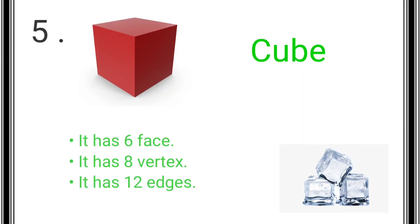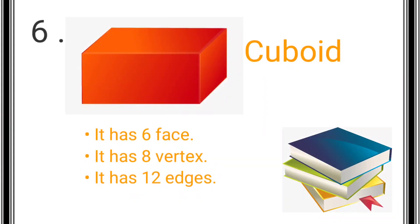The next shape is cube. A cube has six faces, eight vertices, and twelve edges. Example: ice cube.